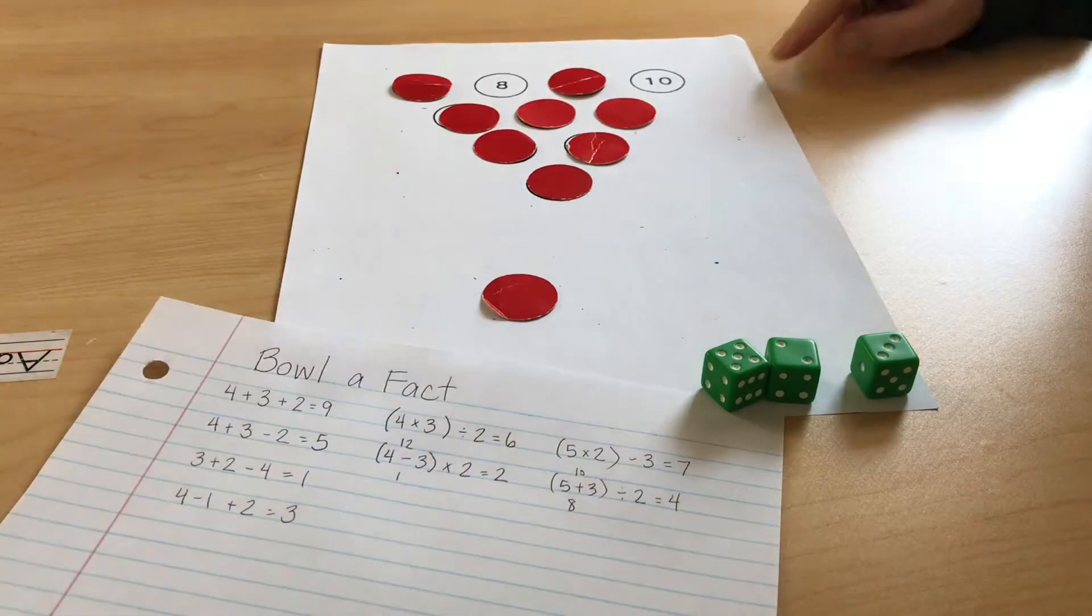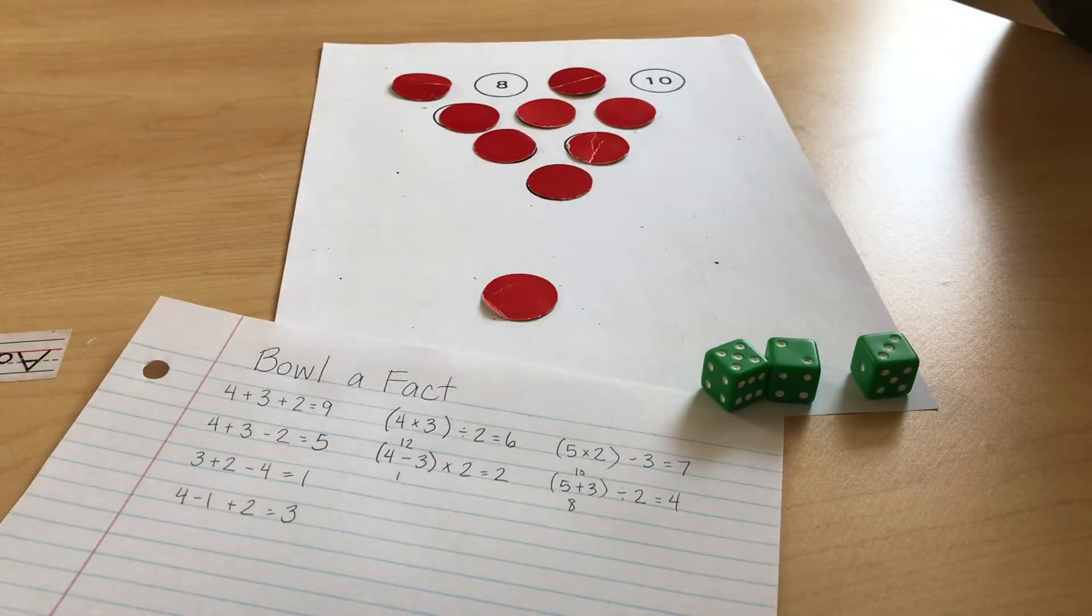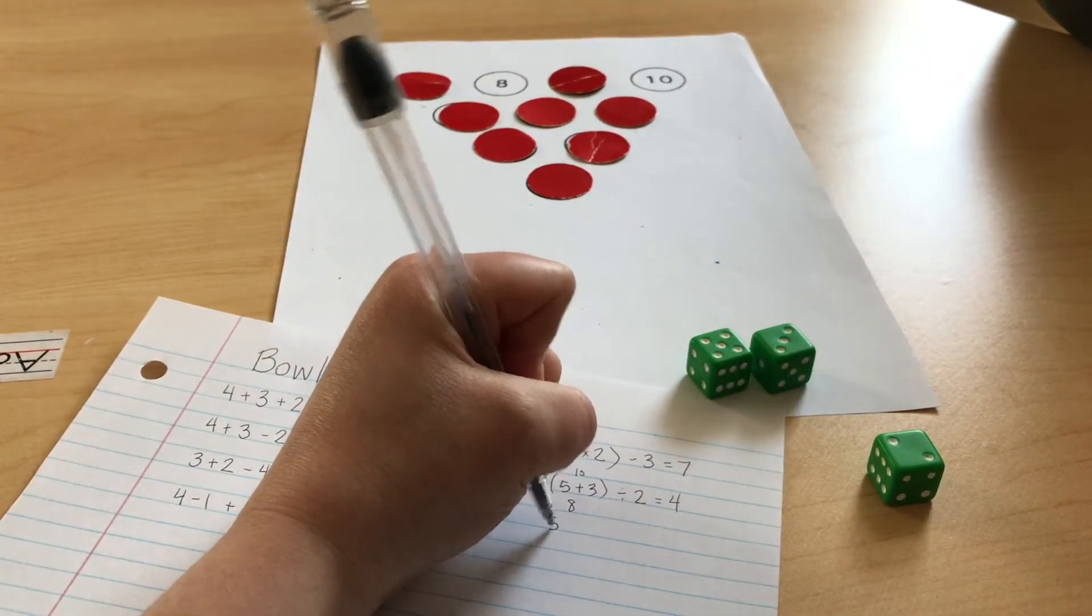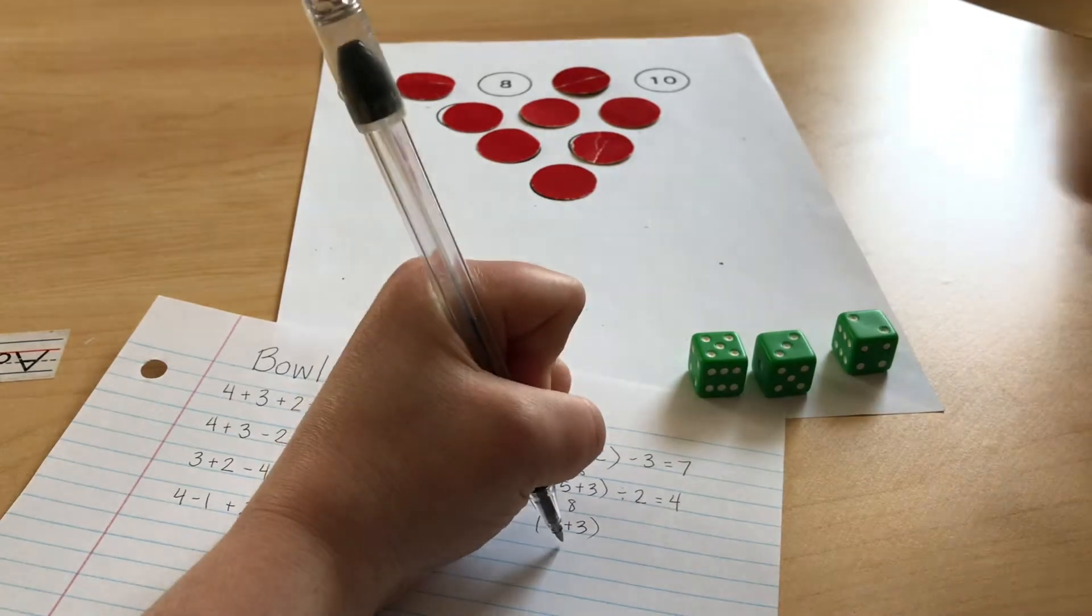I think I see one more. Five plus three is eight, and eight plus two is ten.